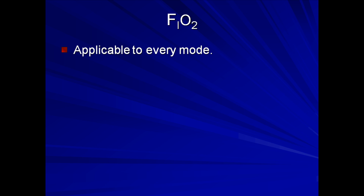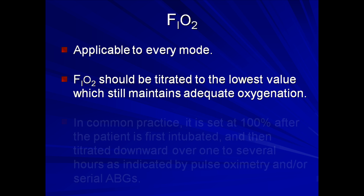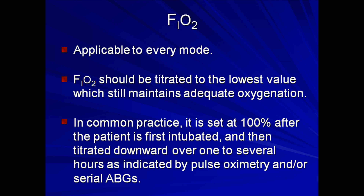FiO2 is actually the only vent setting that is truly applicable to and controllable with every vent mode. Because of theoretical concerns of oxygen toxicity within the lung, the FiO2 should be titrated to the lowest value which still maintains adequate oxygenation. For example, a target O2 saturation in a previously healthy patient in cardiogenic shock from an acute MI may be 97% or higher, while the target O2 sat might be only 88% to 92% for a COPD patient with acute chronic respiratory failure. In common practice, it is first set at 100% immediately after intubation and then titrated downward over one to several hours as indicated by pulse oximetry and/or serial ABGs.